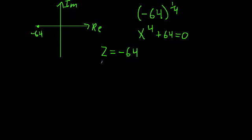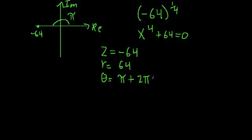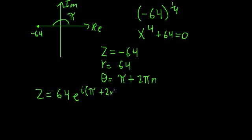Using this point, we have to figure out what the magnitude and the phase are. The magnitude is just the radial distance from the origin — that's just 64. And the phase is the angle between this radius and the positive x-axis, which is just π. We have to be sure to include this plus 2πn to include any higher or lower values of theta that all correspond to this point. We can rewrite our complex number as z equals 64 times e raised to the i times (π + 2nπ).